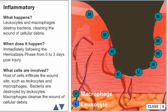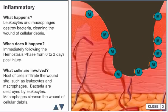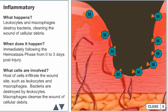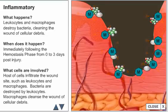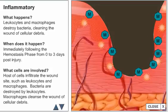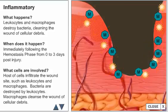Macrophages replace the leukocytes and produce a host of cytokines and growth factors. These act as chemoattractants to other cells needed for tissue repair. Macrophages also convert macromolecules into the amino acids and sugars necessary for wound healing, and it is thought that the macrophage also attracts contractual cells to the wound to encourage wound contraction.